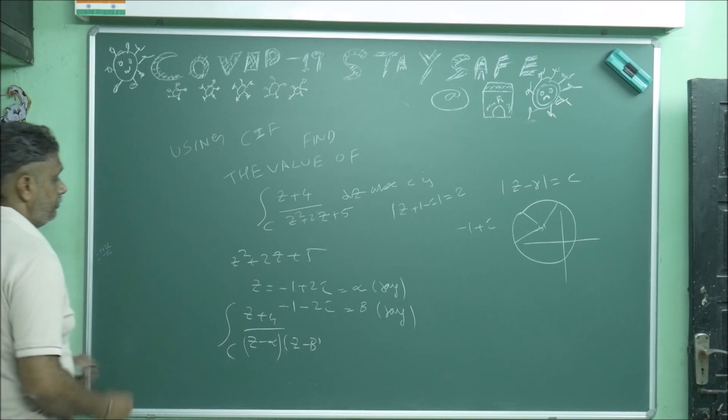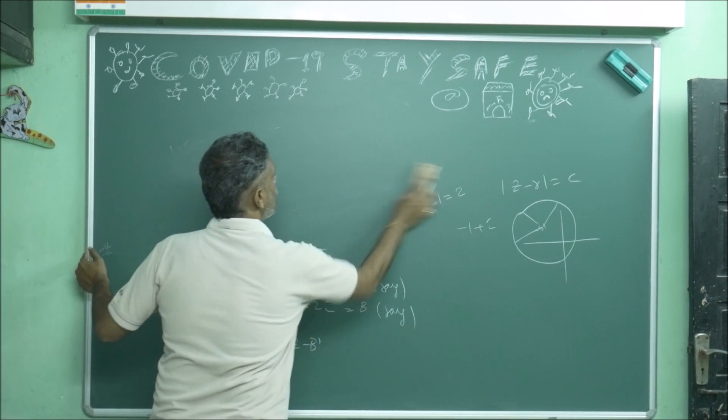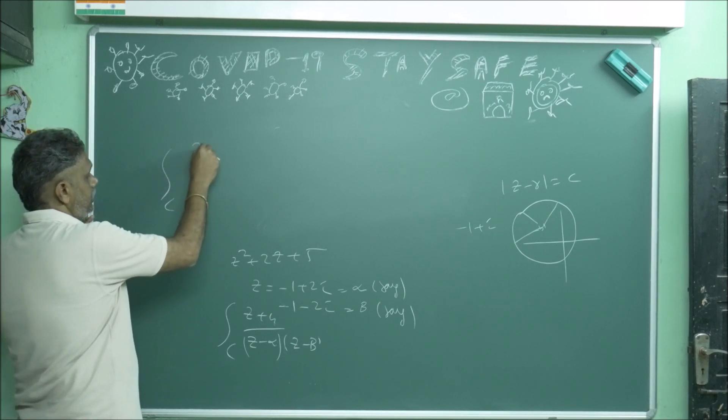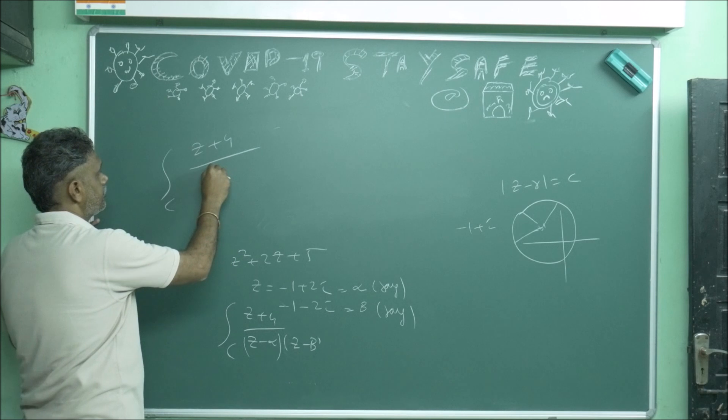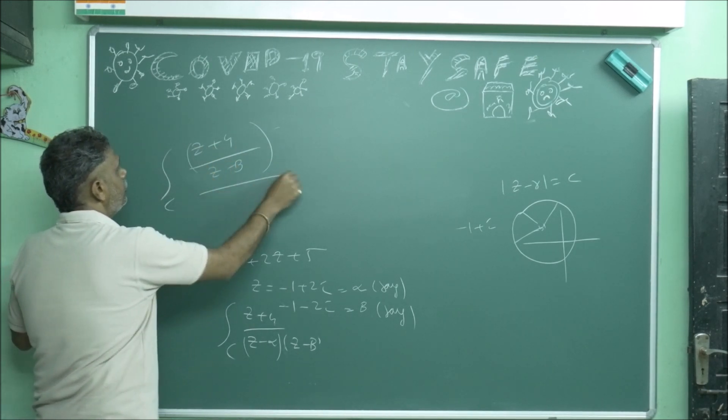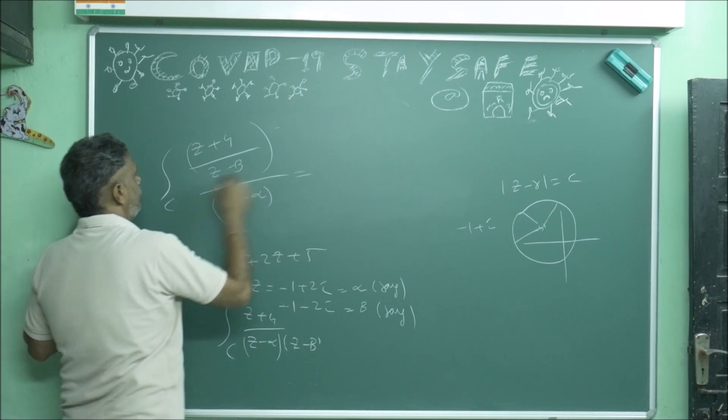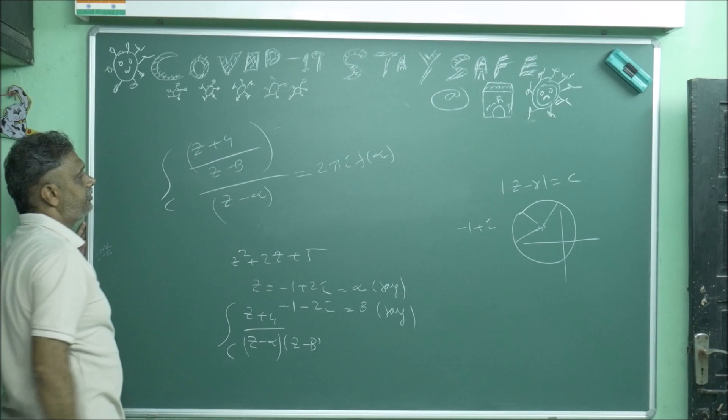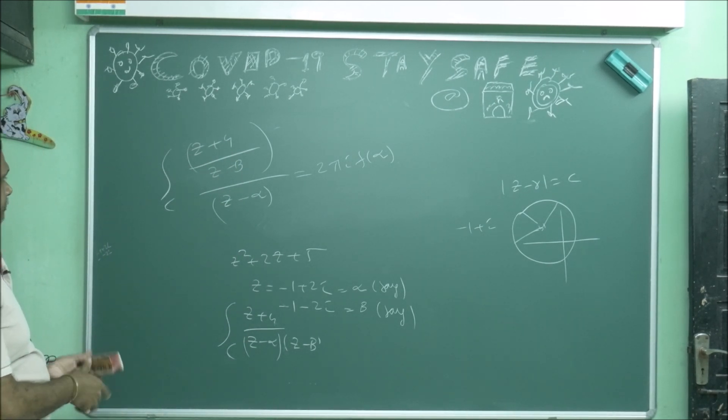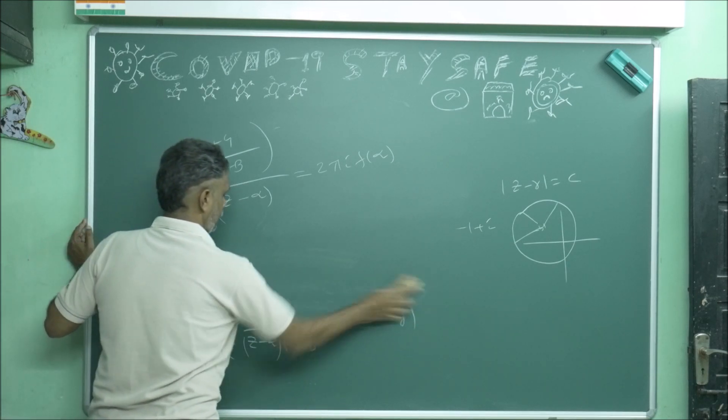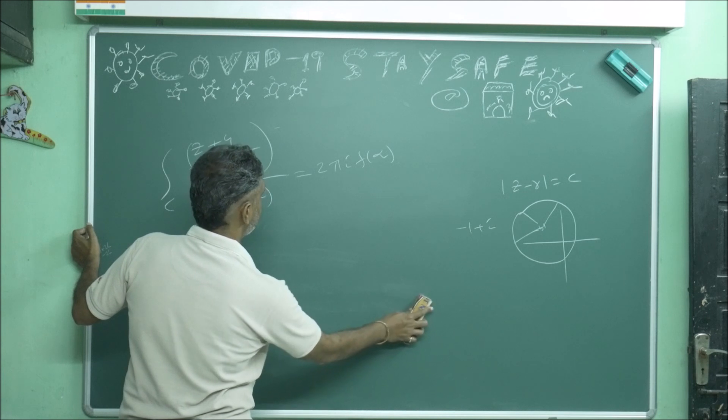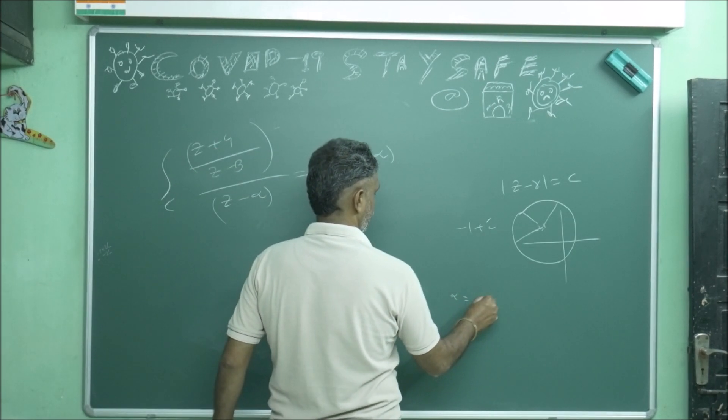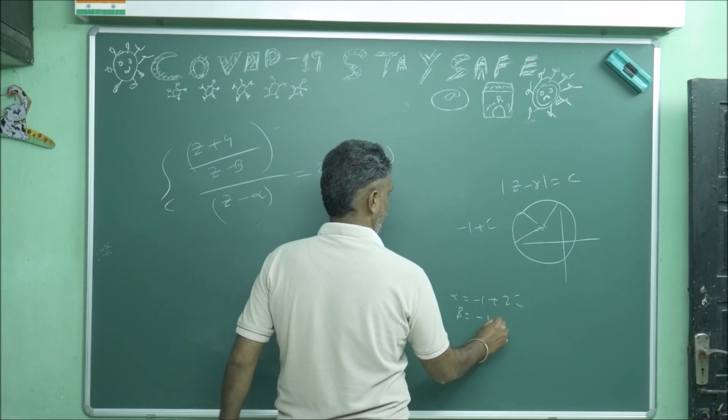How I will write it? Integral over C of (Z + 4)/(Z - α) divided by (Z - β) dZ. See, here 1 by 2πi is not there. You can write 2πi times f(α). Who is my f(z)? (Z + 4)/(Z - β). Just substitute, what you will get? α equals -1 + 2i. α equals -1 + 2i. Beta is what? -1 - 2i.